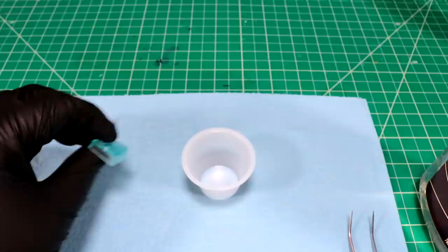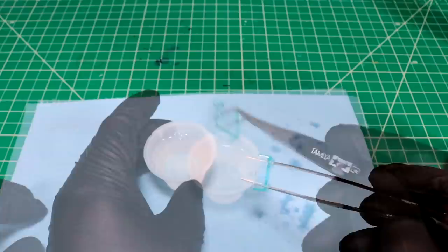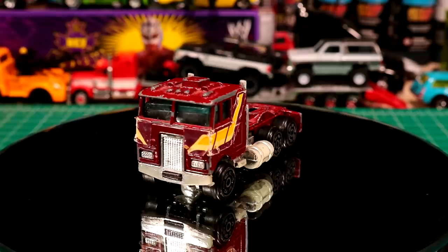Got her windshield sanded down to 2,000. So we're going to give her a little dunk in some floor shine here. It's working. And then once this dries, I'm going to be good to go on doing an assembly. If that dries like that, I'll be happy. I'll be a happy camper.